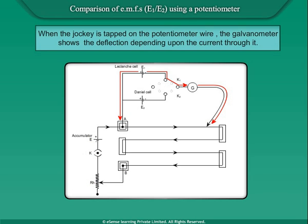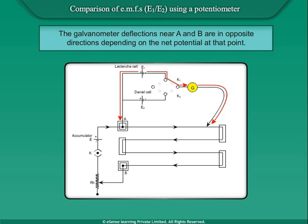When the jockey is tapped on the potentiometer wire, the galvanometer shows deflection depending upon the current through it. The galvanometer deflections near A and B are in opposite directions depending on the net potential at that point.